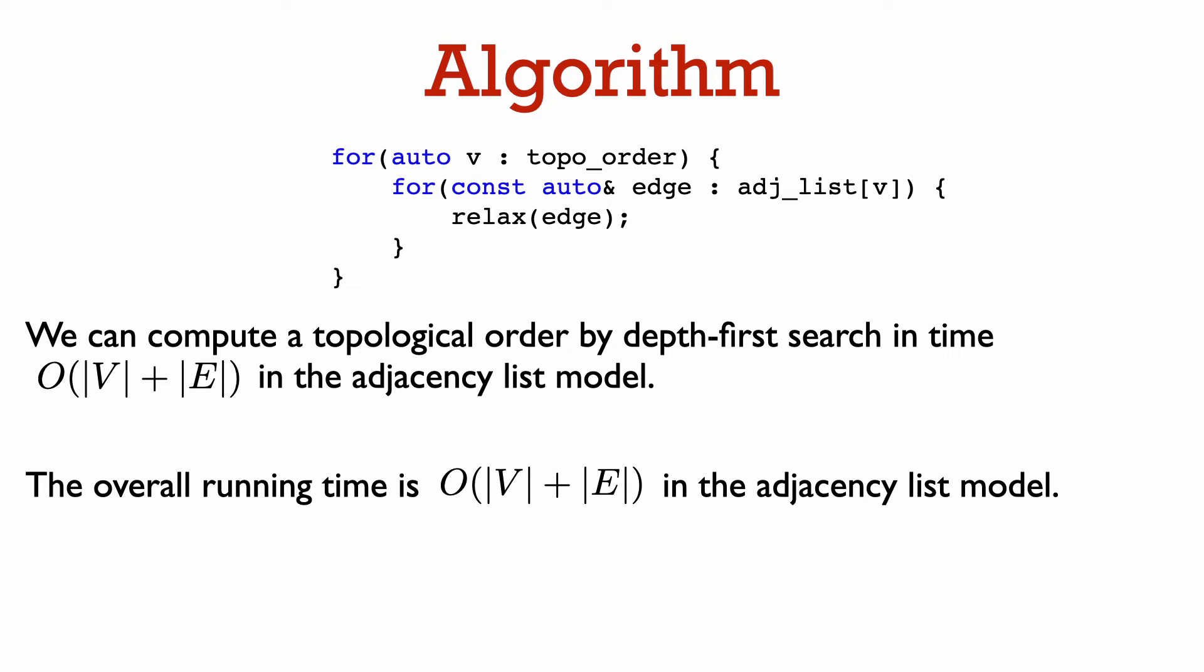This means that overall, the whole running time is of order the number of vertices plus the number of edges in the adjacency list model.